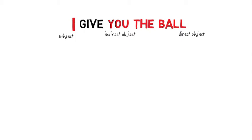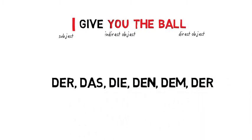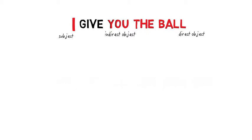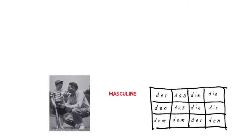German has four cases, and we're looking here at three of them. What difference is all this going to make to your German? A lot. First of all, it allows you to get all this der, das, die, den, dem, der stuff right. So we need our article grid for 'the' — let's have another look at it. To make our sentence, we're going to use the man, the ball, and the boy. All these words are masculine: der Mann, der Ball, and der Junge. And we're going to need a verb — let's continue to use 'give'. That's 'geben'.